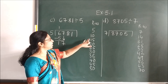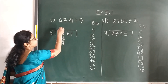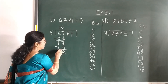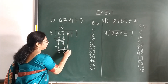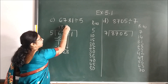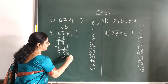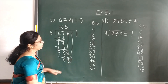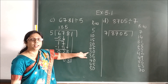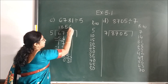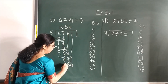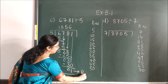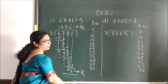Take the next number down. Now 6 is less than 17; 15 is less than 17, so 5 threes are 15. Subtract, bring the next number down. 5 fives are 25. Take the next number — 31. Less than 31 is 30, so 5 sixes are 30. When you subtract you get this answer. This is your remainder and this is your quotient.